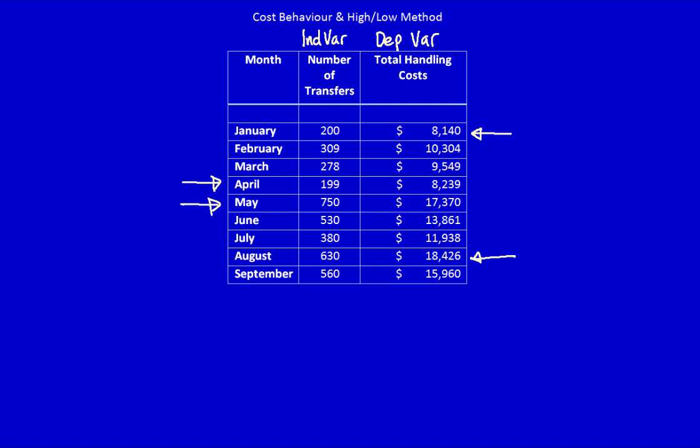Instead, once we have the high and low points for the independent variable, we simply take the dependent variable from those same points. So I'm going to take April's total handling cost and I'm going to take May's total handling cost. We don't care if there are higher or lower dependent variables. For instance, we already saw January and August. We simply use the total handling costs from the high and low number of transfers.